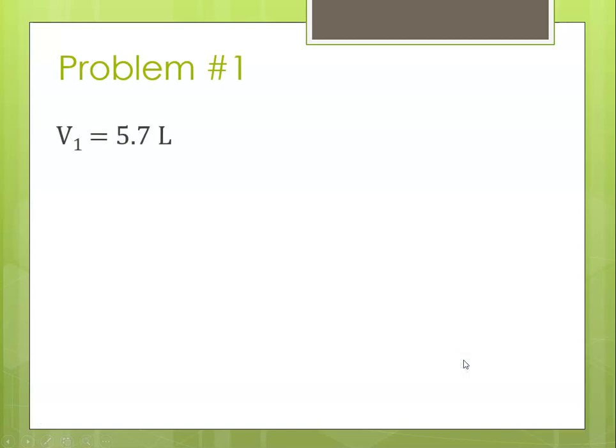So, let's identify the variables. V1 was 5.7, T1 was 19 degrees C. Adding 273 to it, we get 292 Kelvin. V2 was 6.1 liters, and T2 is the question mark.